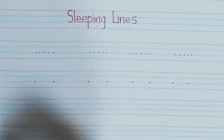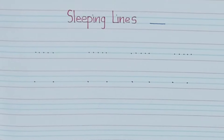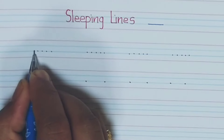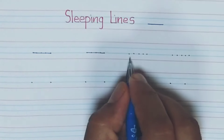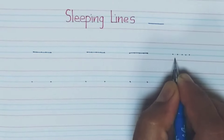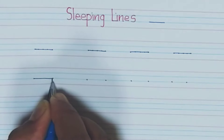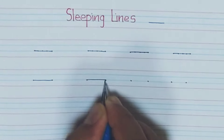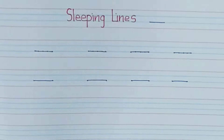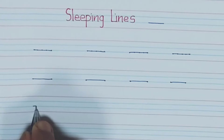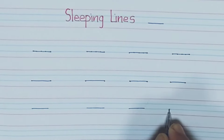Next, sleeping line. It is a line from side to side — it is a horizontal line. First, trace the dot from first dot to last dot, one side to another side. Next, join the dots. It is a sleeping line. Then you can draw a sleeping line easily without any dots, side to side.